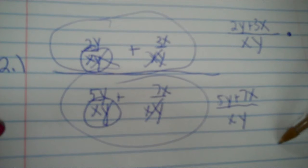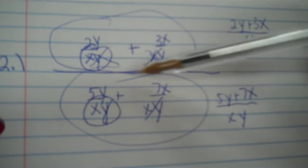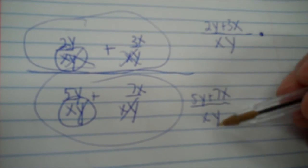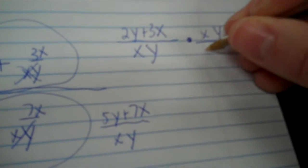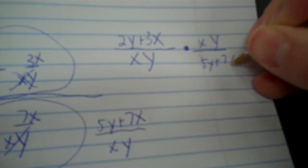That's your common denominator. Five y plus seven x. But we need to reciprocate that now. x, y needs to be on top. And five y plus seven x needs to be on bottom.